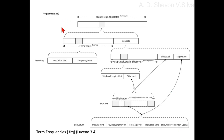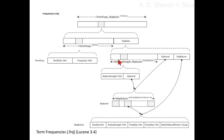Here you can see the term frequencies dot frq file. The term frequency and skip data are shown with the term count. This consists of term freq, doc freq, and skip data. The term freq consists of doc delta vint and frequency vint. The skip data consists of skip level length and skip level, with num skip levels minus 1 additional skip levels and skip datum.